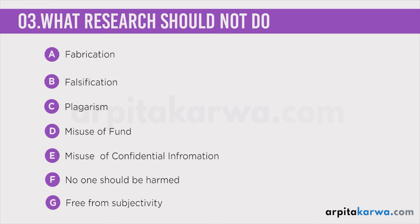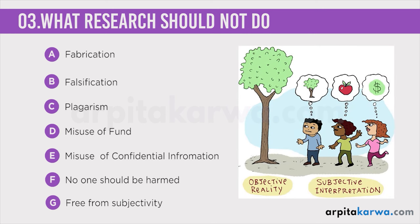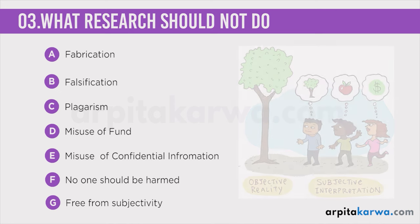Subjectivity is directly opposite of objectivity. Objectivity means that research should be free from personal bias. If you are becoming very subjective about something, that means you are putting your own opinions and views into the scene. Whereas if you're objective, you're looking at the situation clearly — not putting your emotions, your beliefs, or your personal opinions and lenses into it.